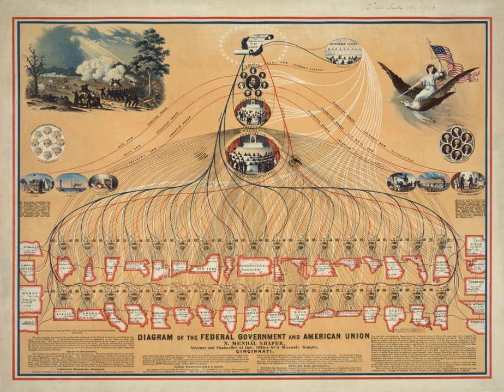The federal government is composed of three distinct branches — legislative, executive, and judicial — whose powers are vested by the U.S. Constitution in the Congress, the President, and the federal courts, respectively. The powers and duties of these branches are further defined by acts of Congress, including the creation of executive departments and courts inferior to the Supreme Court.